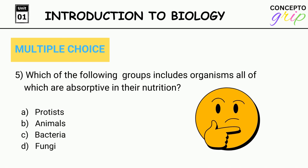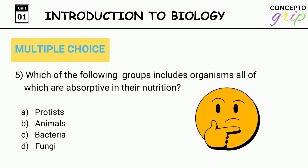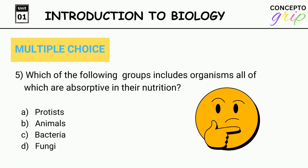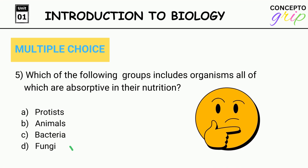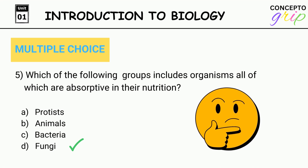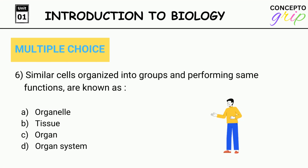Question 5. Which of the following groups includes organisms all of which are absorptive in their nutrition? A. Protists, B. Animals, C. Bacteria, D. Fungi. Correct option is D. Fungi.